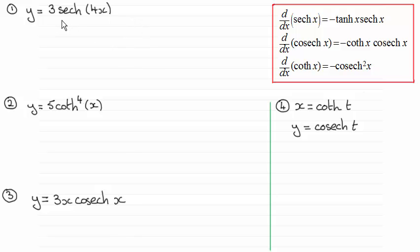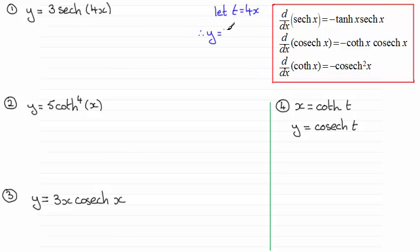For this first one, y equals 3 sech(4x). What I'd want to do is let t equal 4x and use the chain rule. So letting t equal 4x means that y equals 3 sech(t). Picking up on the chain rule: dy/dx equals dy/dt times dt/dx.